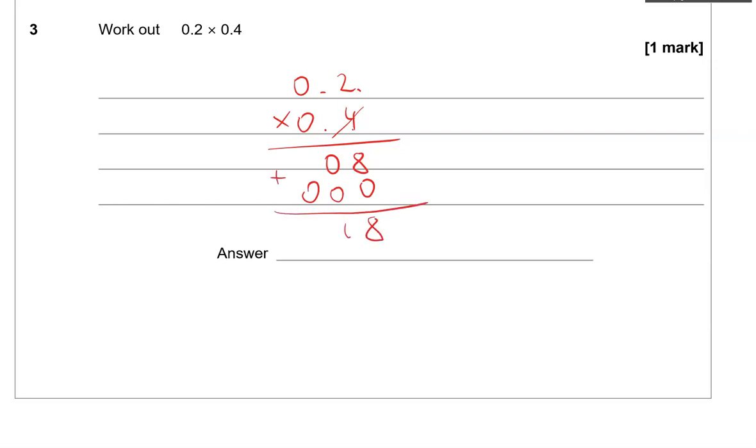Adding. And now counting the decimal places, that is how many digits after the decimal point. So we've got 1 here and another 1 here, so that's 2 in total. And that's how many decimal places will give the answer. So we go backwards. So 0.08 is the answer.